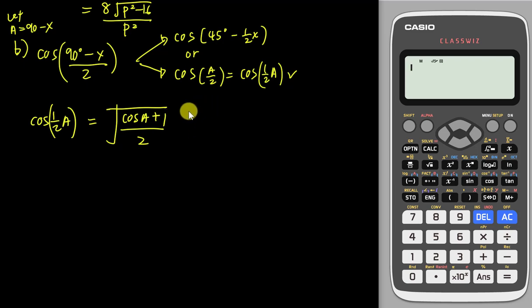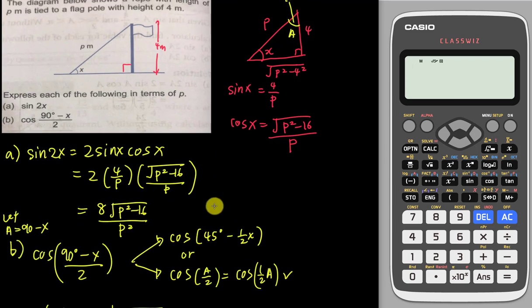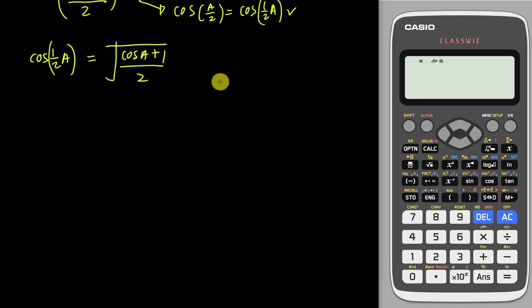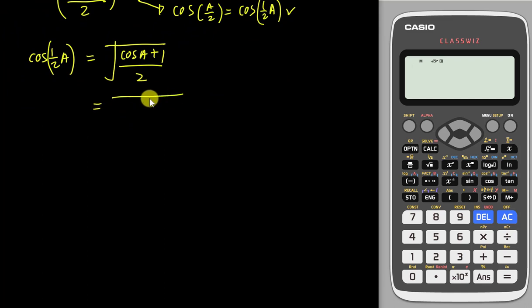So if I refer back to here, if this is angle a, so cos a will be adjacent, which is 4, over hypotenuse, which is p. So my cos a itself is 4 over p. So I can just substitute this one into here. So this one, cos a is 4 over p plus 1 over 2.